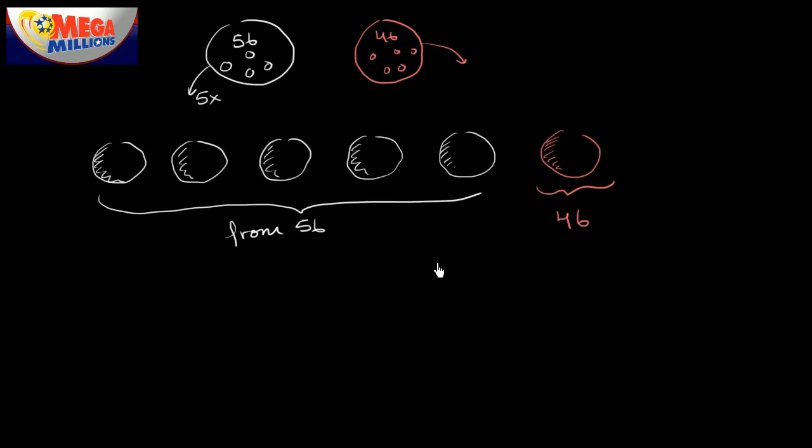And so to figure out the probability of winning, it's essentially going to be one of all of the possibilities of numbers that you might be able to pick. So essentially, all of the combinations of the white balls times the 46 possibilities that you might get for the Mega Ball. So to think about the combinations for the white balls, there's a couple of ways you could do it.